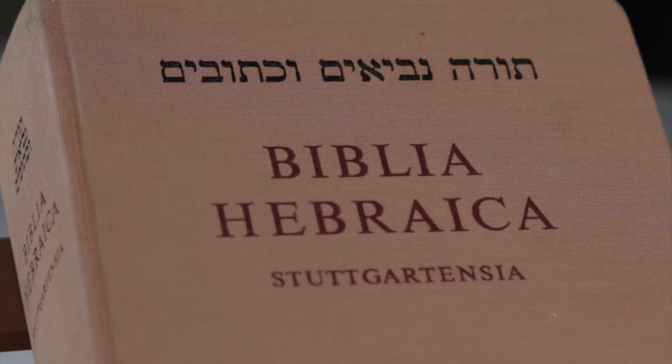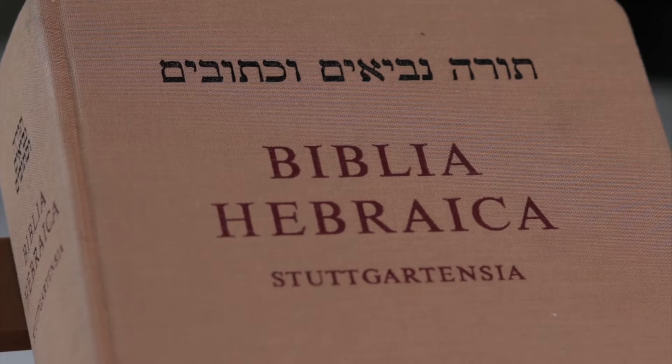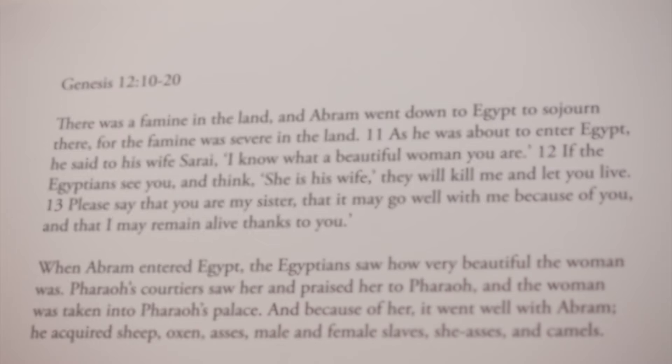When I speak about the Hebrew Bible as a text written by involuntary migrants, to involuntary migrants, about involuntary migration, that often strikes people as unusual — that's not the way they're used to thinking about it. A good example to help people understand that is to think about the book of Genesis and the main characters in that book: Abraham, Isaac, Jacob, and Joseph, who are familiar to very many people.